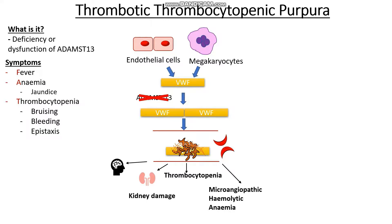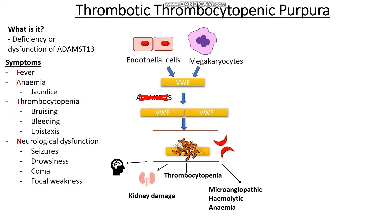We might then see neurological dysfunction, which could be in the form of seizures, drowsiness, coma, or focal weakness, which means one side of the body is affected, just like the picture of a stroke. And lastly we're going to see issues with renal failure, and this could be things like blood in the urine, or even a reduced urine output.